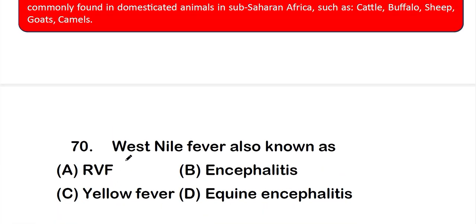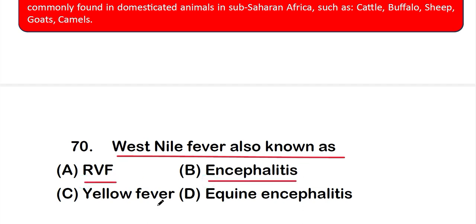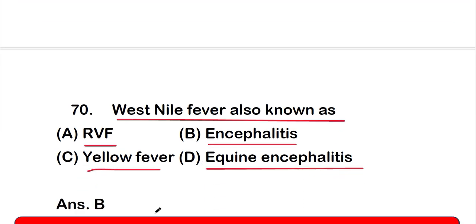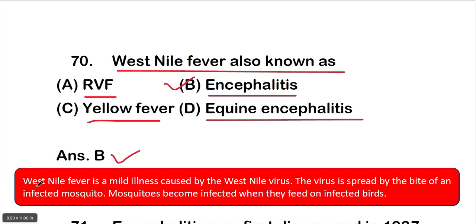Question number 70: West Nile fever is also known as — option A: RVF, option B: encephalitis, option C: yellow fever, or option D: equine encephalitis. The correct answer is option B, encephalitis. West Nile fever is a mild illness caused by the West Nile virus, spread by the bite of an infected mosquito. Mosquitoes become infected when they feed on infected birds.